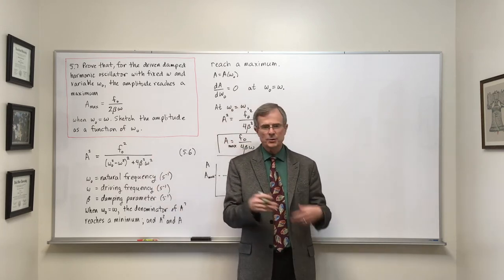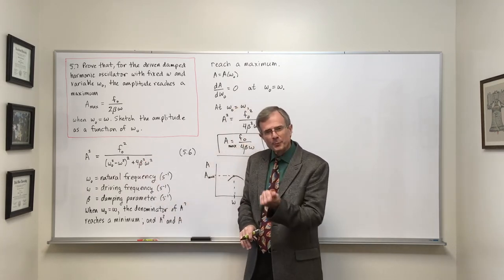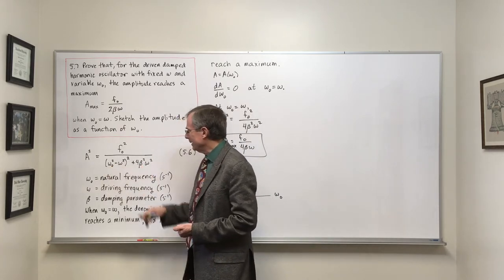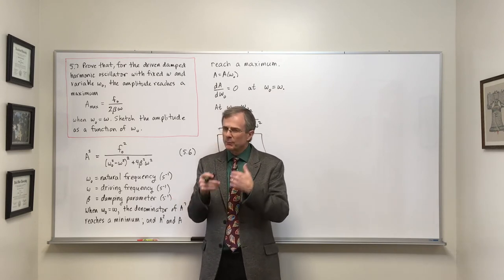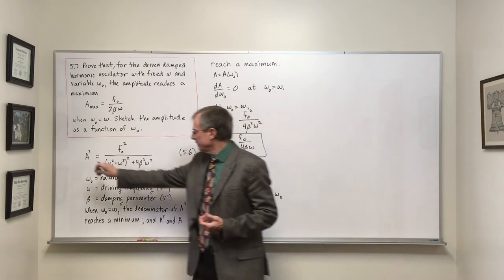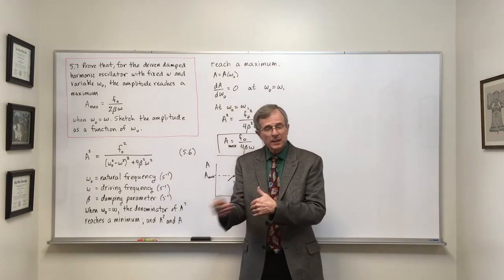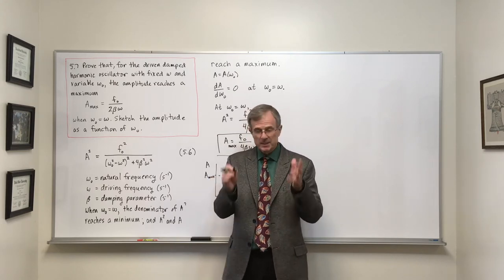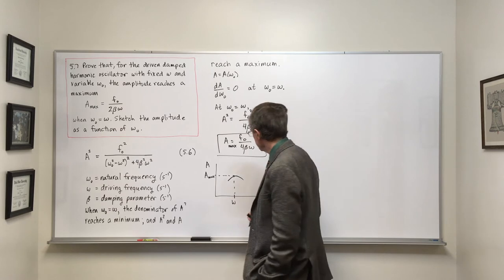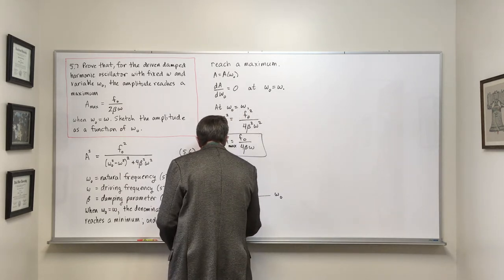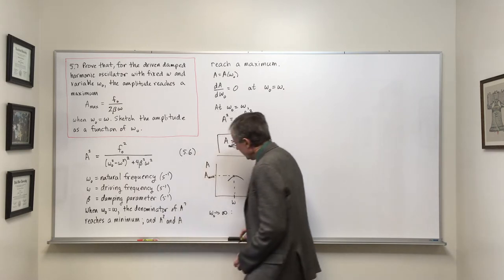You can plug this into a calculator or use Python to find what this looks like for particular values of omega, beta, and f-naught. But more useful is to see how it depends on these parameters in various limits. This skill of taking limits is extremely important — I use it all the time in research. Let's look at omega naught approaching infinity.